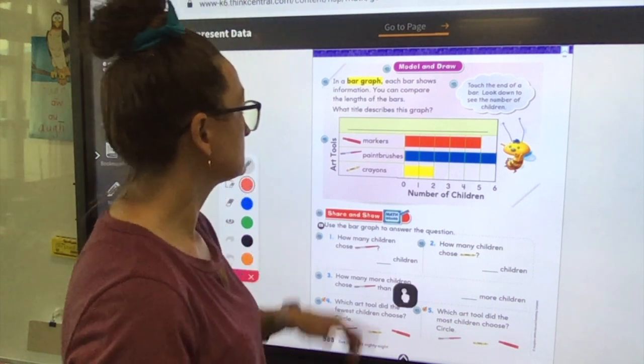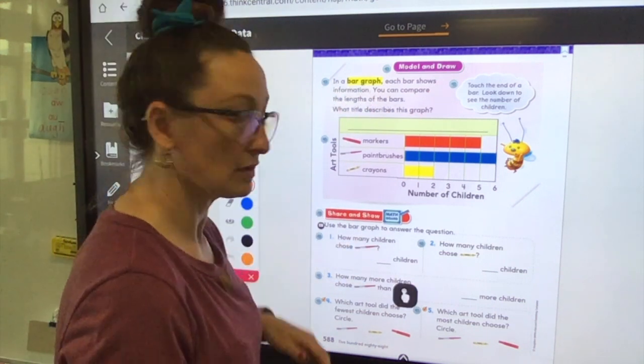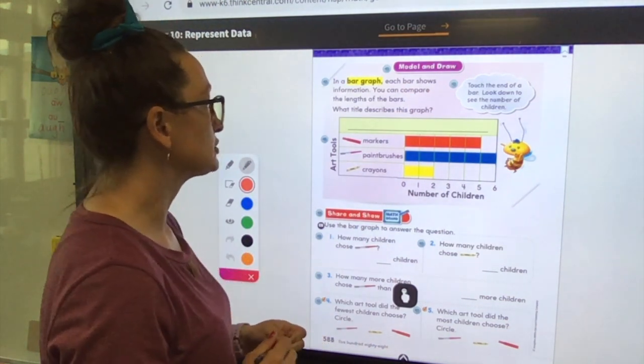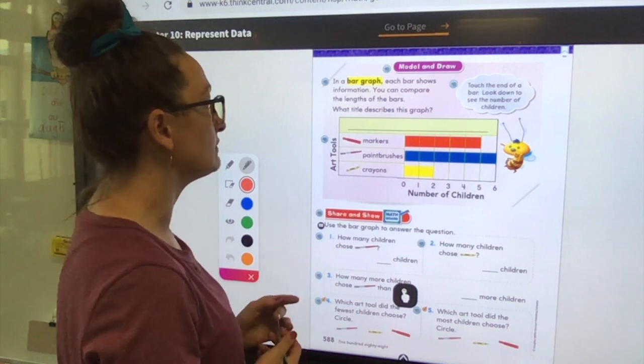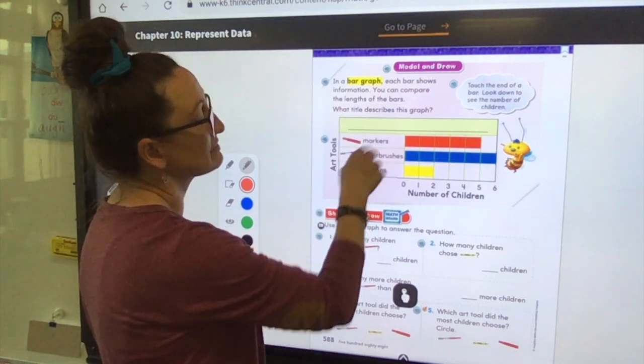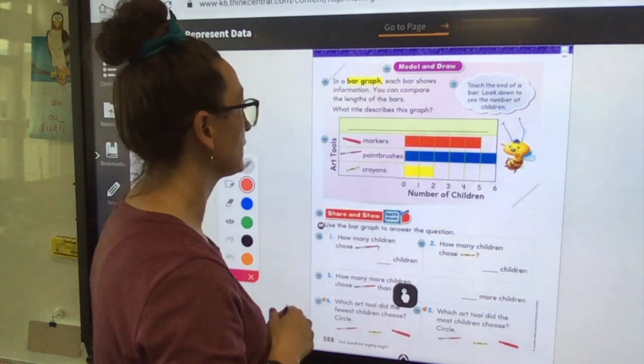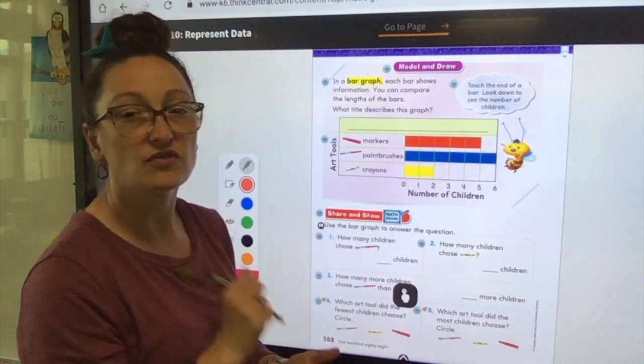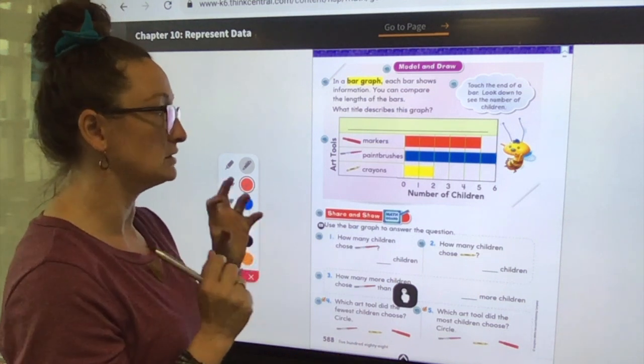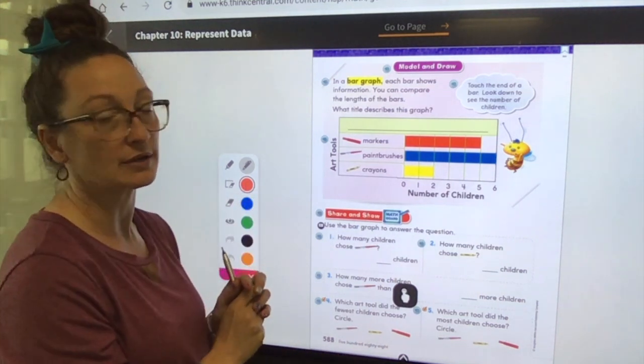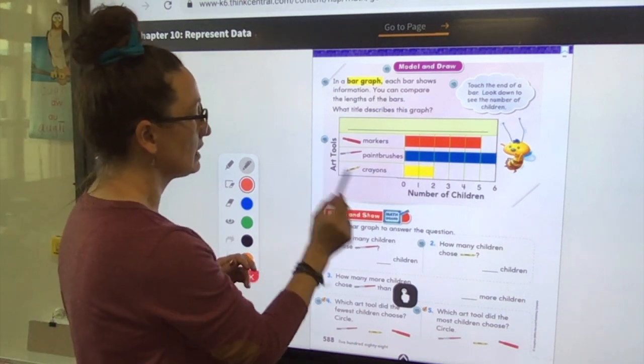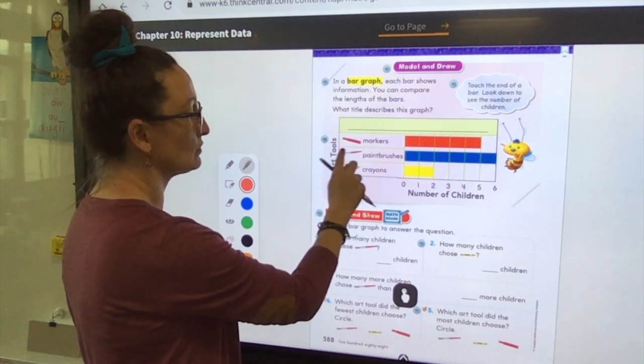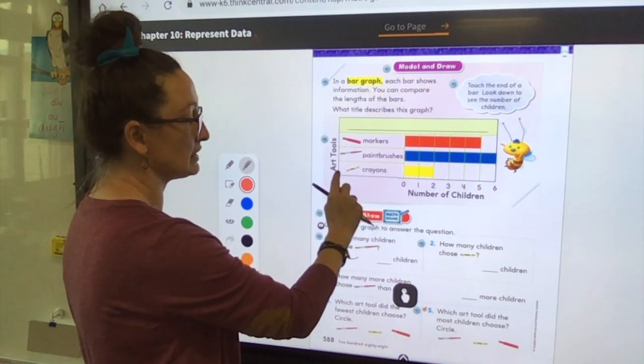Okay, so let's look up here and you're on page 588. And in a bar graph, each bar shows information. You can compare the lengths of the bars. And then it wants us to make up a title for our bar graph. Okay, so let's find some important information on our bar graph. First I want you to find the bold letters, the big black bold words that jump out at you. So I see some right here and I see some right here.